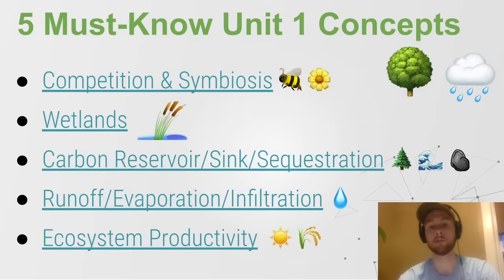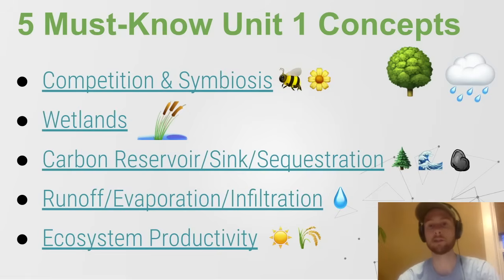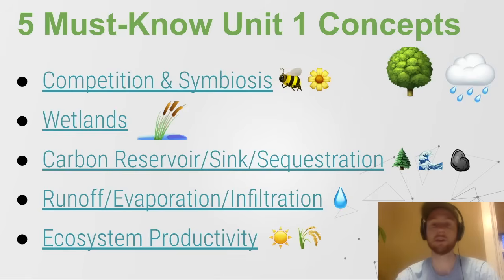Then we have carbon reservoir, sink, or sequestration. It's really important to understand the carbon cycle. Reservoirs are areas that store carbon for a period of time, and sinks are areas that can store increasing amounts of carbon. Sequestration is just the act of storing carbon — trees can sequester carbon, but carbon can also be sequestered for a really long time in fossil fuels underground. The ocean is also another reservoir for carbon, and carbon can also be stored as sediments at the bottom of the ocean.